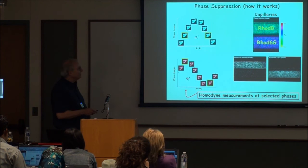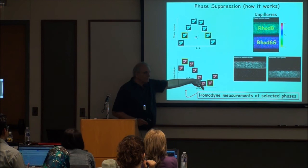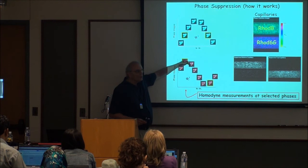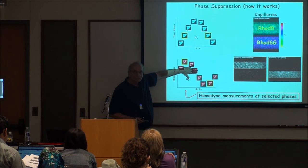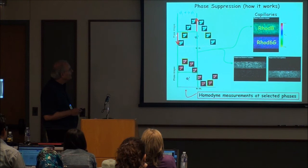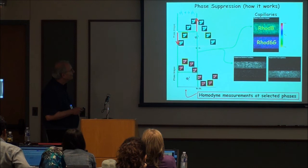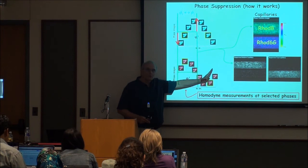To demonstrate this: we have rhodamine B and rhodamine 6G, which have different lifetimes. We put them in cuvettes, put them in our microscope, and measure them. We measure the phase of each one. In our homodyne experiment, we get the phases of the different dyes — they're all sine waves but with different phases. We can set up our instrument to gather two particular phase components and subtract them. If we subtract two components that are at the same phase, we get zero. If they have different phases, we get a signal.